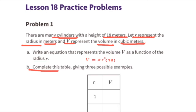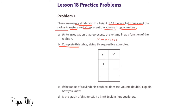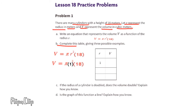Part b: complete this table giving three possible examples. In the table they have 1 representing the radius, so we substitute r with 1. The equation reads v equals pi times 1 squared times 18, which equals 18 pi. When the radius is 1, the volume is 18 pi. For the next row, let's use 2. We substitute r with 2: v equals pi times 2 squared times 18. Two times 2 times 18 equals 72, so when the radius is 2, the volume is 72 pi.